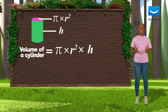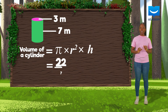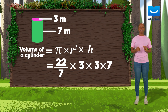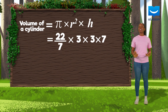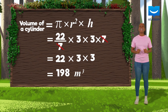Assuming this cylinder has a radius of 3 meters and a height of 7 meters, its volume is 22 over 7 times 3 times 3 times 7. We can simplify this to 22 times 3 times 3, so the volume is 198 cubic meters.